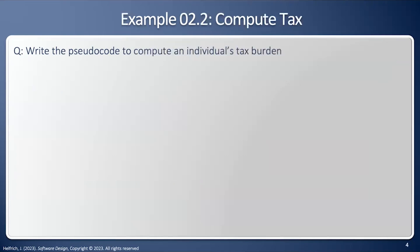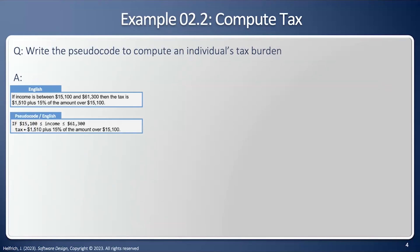Let's take a look at a second example. I want to write the pseudocode to compute an individual's tax burden. I'm going to start with the English description that was copy pasted directly from the IRS's tax form. This was 2006 tax form, so these numbers are out of date, but the idea is the same. If income is between $15,000 and $61,000, then the tax is $1,500 plus 15% of the amount over $15,000.